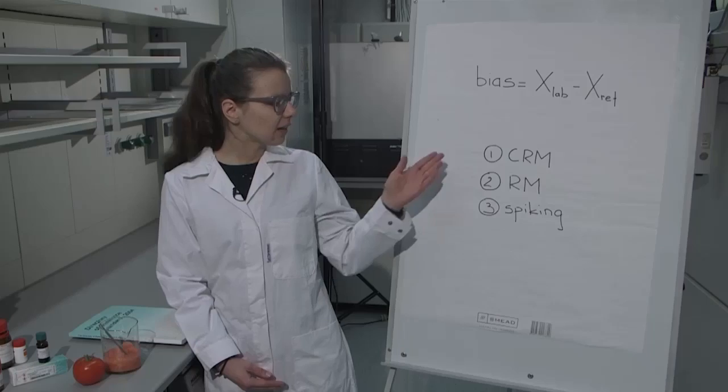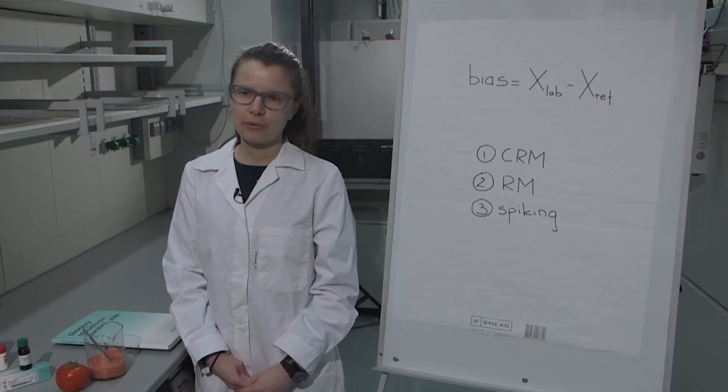So in this part we will discuss how to get this reference value. What we need from this reference value is that it is independent from our measurements that we have done in our validation. Also it's good if it has some uncertainty and that it is exactly in the matrix that you are analyzing your sample. So there are three main possibilities to find this reference value and we'll go through all of these.